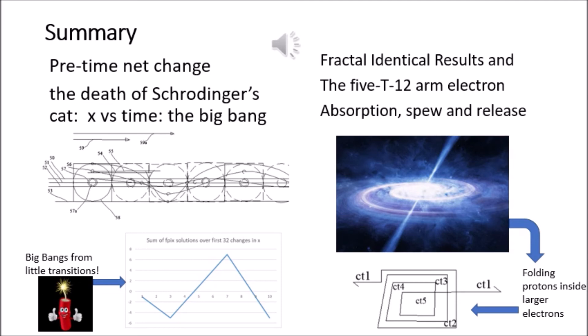The neutron absorbs CT1 and spews out higher CT states, giving motion to the atom and allowing it to act in a gravitational fashion without continually increasing its mass.